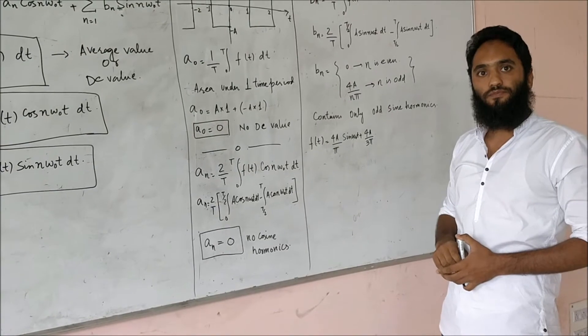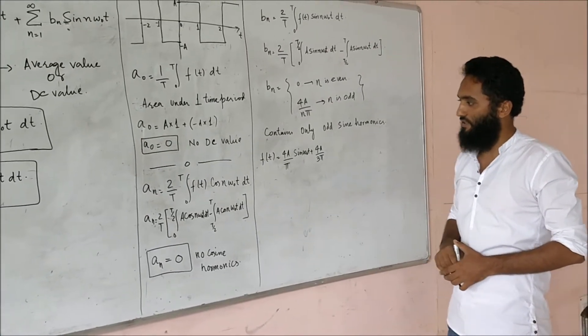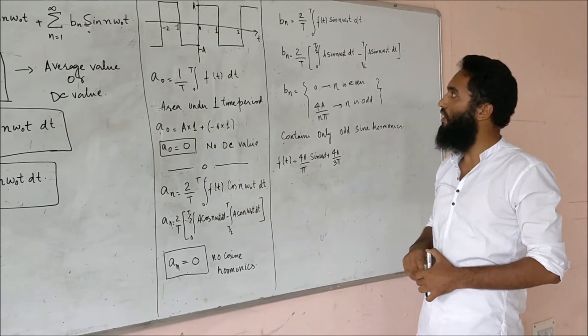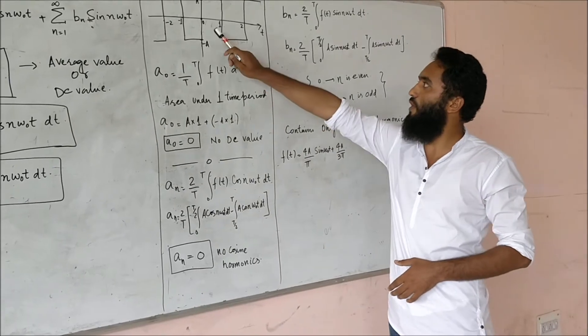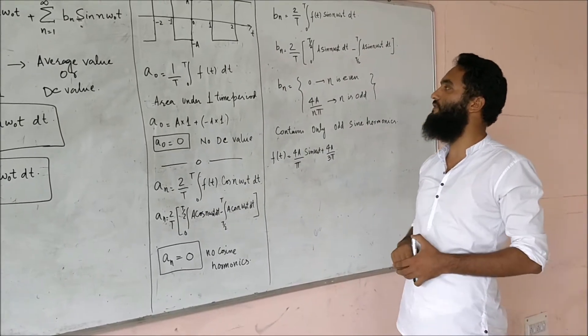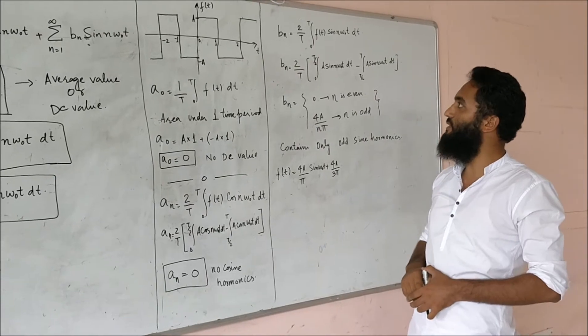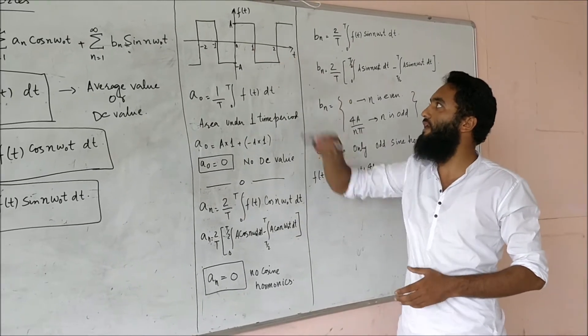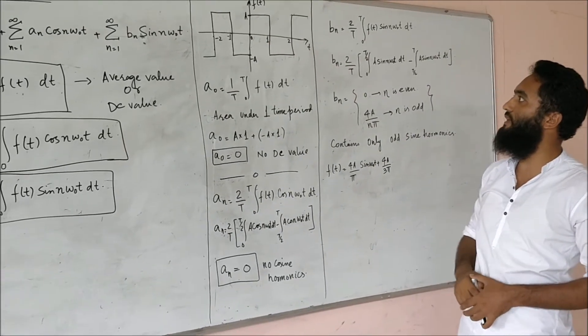If I solve this integral, there will be two values of this signal. From 0 to 1, which is exactly half of the time period, this signal will be attaining the value of A, and for the next half cycle it will attain the value of minus A.